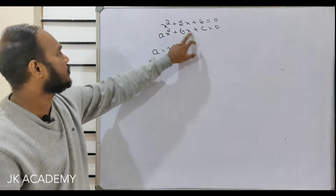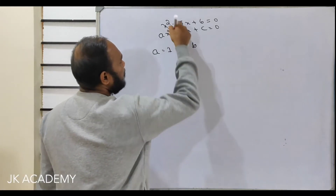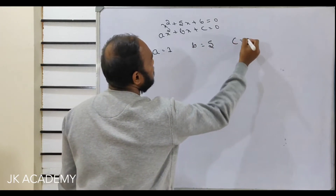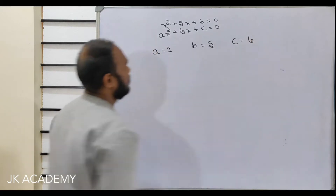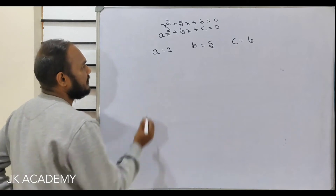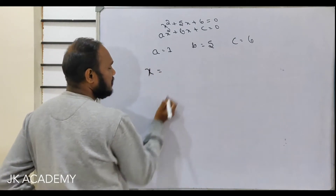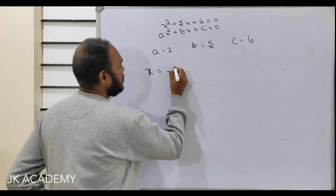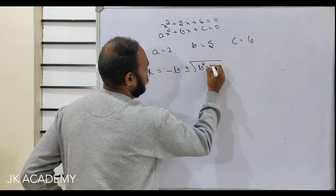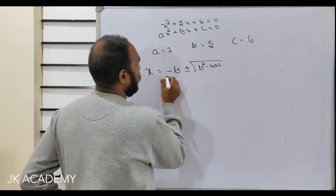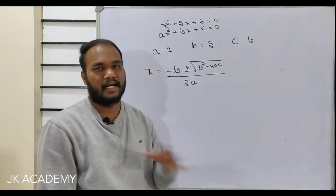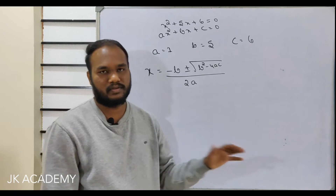After writing the a, b, c values, we need to use this formula: x equals minus b plus or minus root of b squared minus 4ac, all over 2a. Pause this video and learn this formula right now. We are going to use this a lot.